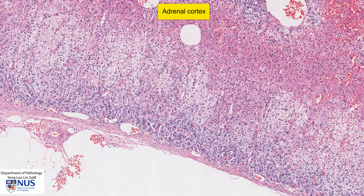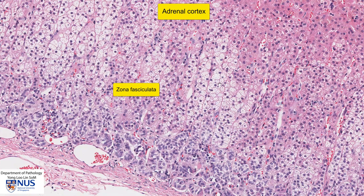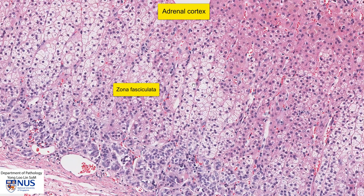This pale zone is the zona fasciculata, and the cells here elaborate glucocorticoids. The cells are arranged in cords, and we can see that there is very abundant, bubbly, pale cytoplasm. These cells are very rich in lipids, which gives the adrenal cortex this bright yellow colour grossly.